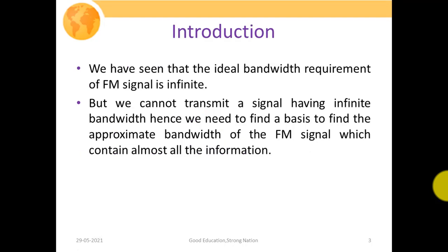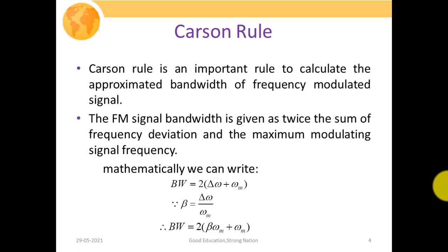We have seen that the ideal bandwidth requirement of an FM signal is infinite. In the last lecture, while discussing the bandwidth requirement of FM signal, we found that the ideal bandwidth becomes infinite. But we cannot transmit a signal with infinite bandwidth since all physical mediums have finite bandwidth. So it is not possible to transmit an infinite bandwidth signal through a finite bandwidth channel. Hence we need to find an approximation for the FM signal bandwidth that contains most of the information.